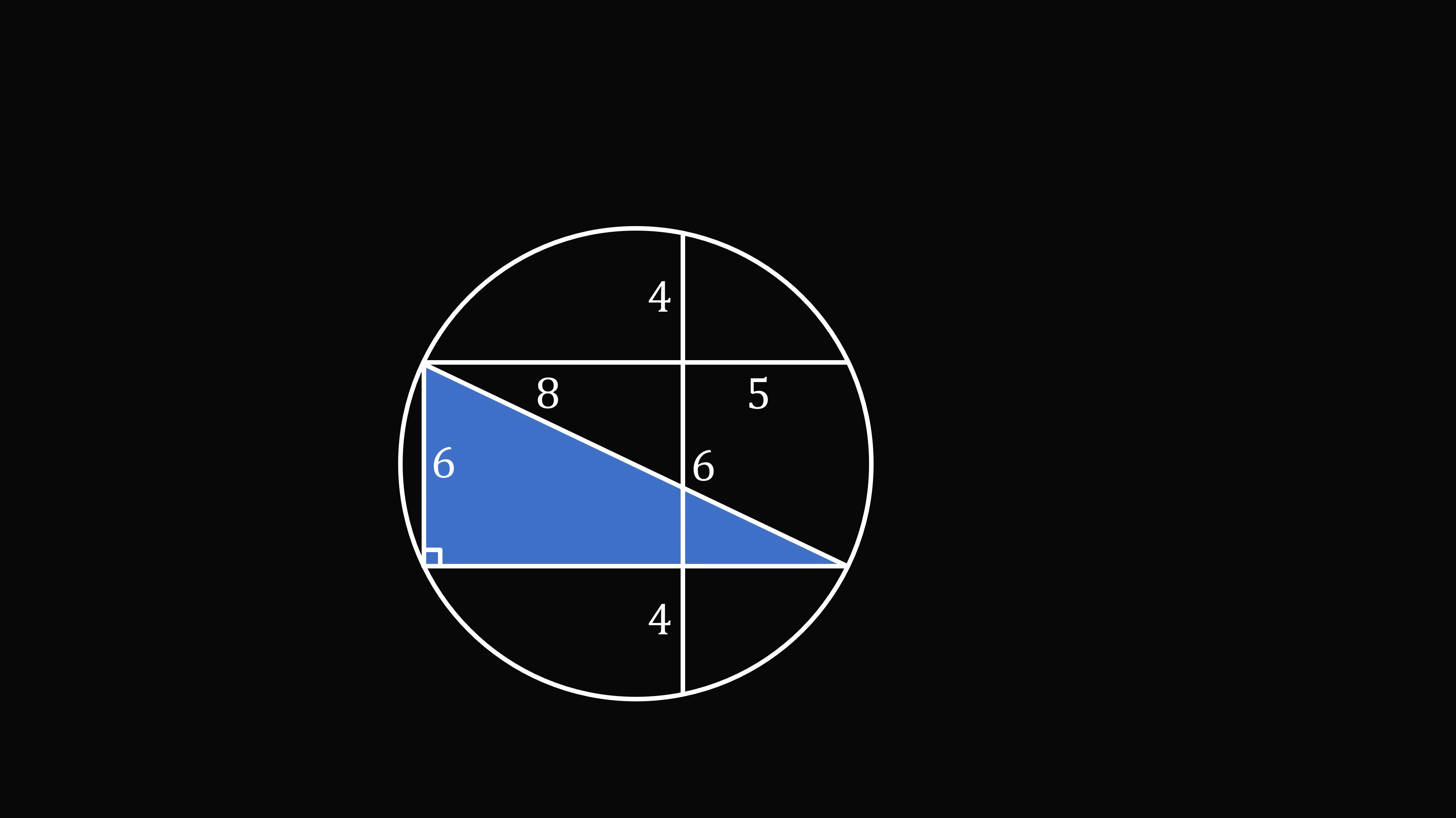We now have a right triangle, where the hypotenuse is equal to 2r, one leg is equal to 6, and the other leg is equal to 8 plus 5, which equals 13. We'll just focus on this right triangle.